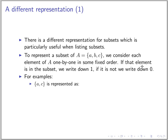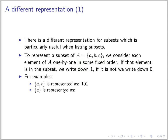Today we look at another representation of subsets that will be useful when we list them. To represent a subset of the set {a, b, c}, we look at each element of the set one by one and check if that element belongs to the subset — if it does we write one, if it doesn't we write zero. So for the subset {a, c}, a is in the subset so we write 1, b is not so we write 0, c is in so we write 1.